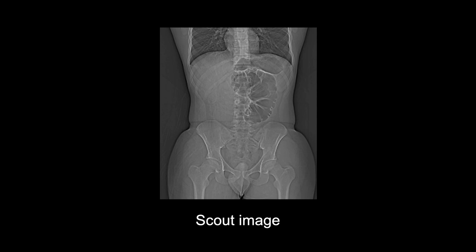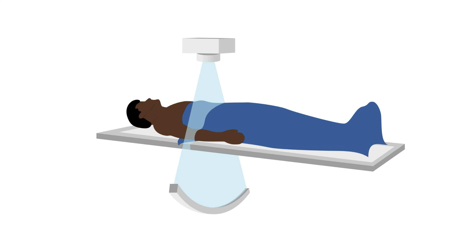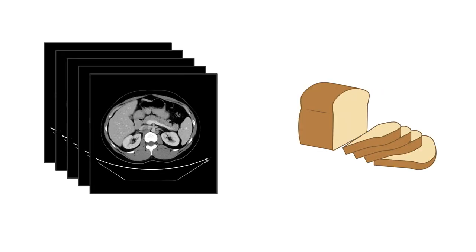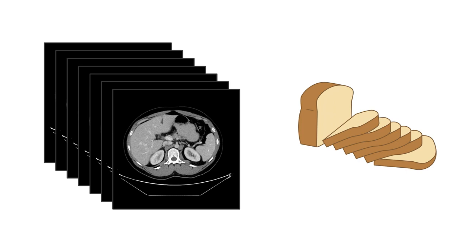For instance, in an abdominal pelvic CT, the scout image is used to plan the scan from a few centimeters above the bottom of the lung to just below the pubic symphysis. During a CT scan, the tube and detectors spin very quickly around the patient while continuously taking pictures as the patient passes through the scanner. This provides information about how the body blocks x-rays from every angle, and this extra information is used to create three-dimensional images which allow you to scroll through the body slice by slice and see very detailed anatomy.